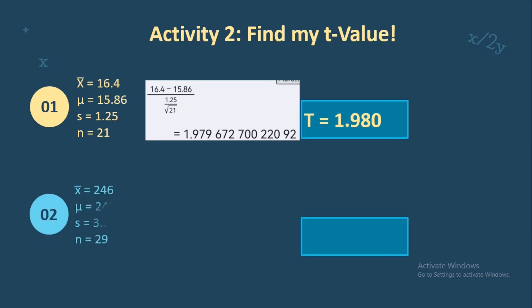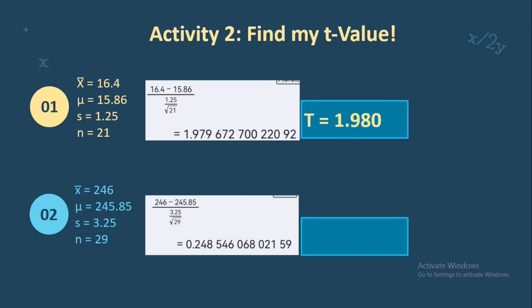For number 2: the sample mean is 246, the population mean is 245.85, sample standard deviation is 3.25, and the sample size is 29. Using the T value formula: 246 minus 245.85 over 3.25 divided by the square root of 29. We get 0.248, and rounding off to the nearest three decimal places, the T value is 0.249.